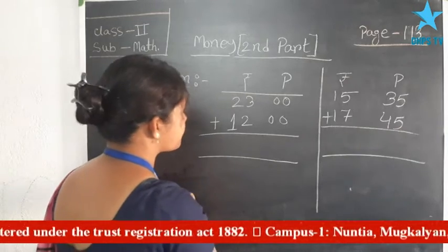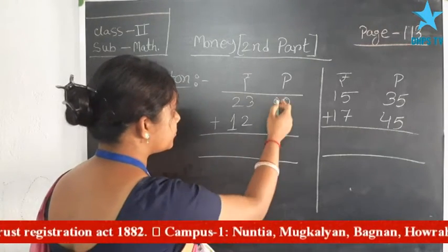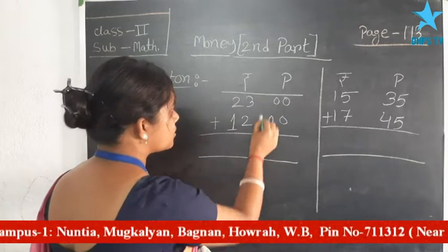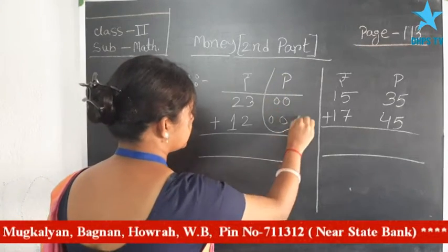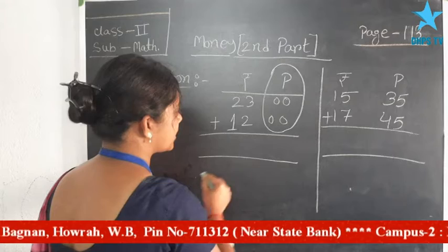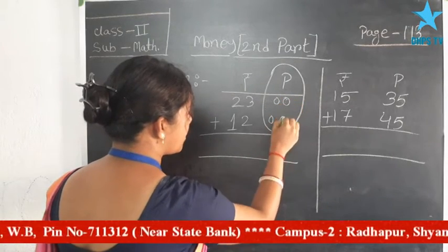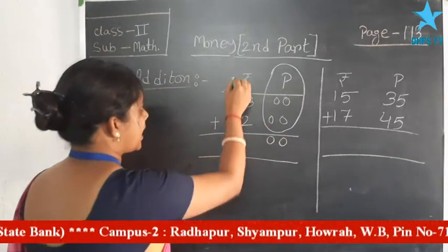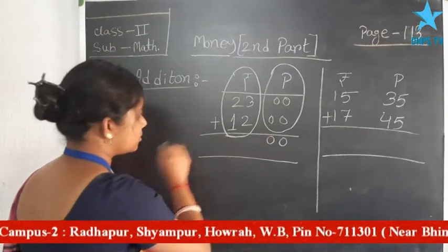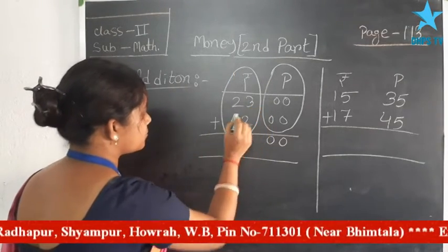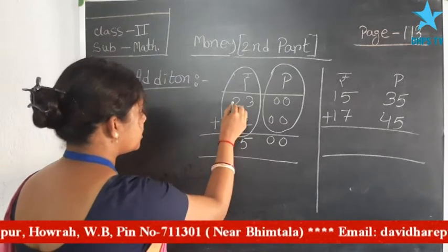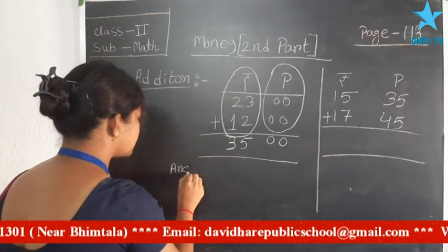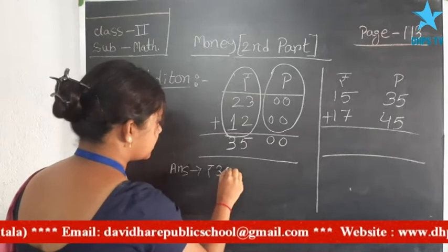Always start the addition problem from the right side. Here on the right side the column is paisa. At first add the column of paisa: 0 plus 0 is 0, then 0 plus 0 is 0. Now add the column of rupees: 3 plus 2 is 5, and 2 plus 1 is 3. So the final answer is rupees 35.